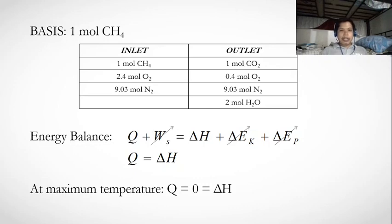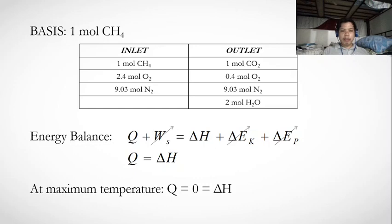Our basis is 1 mole of methane. The inlet has 1 mole of CH₄, 2.4 moles of O₂ (that is 2 plus 20% of 2), and 9.03 moles of N₂ (from 2.4 × 79/21). The outlet has 1 mole of CO₂, 0.4 moles of excess O₂, 9.03 moles of N₂, and 2 moles of H₂O.